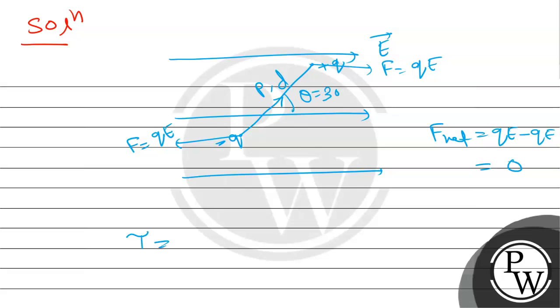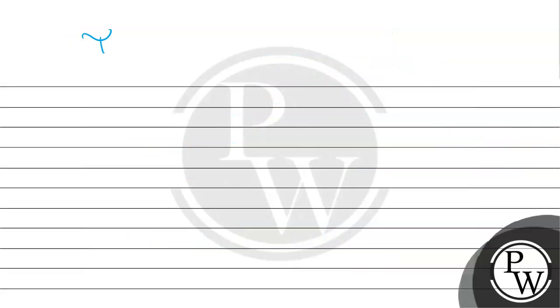Now for the torque: torque equals tau equals P vector cross E vector, which equals P E sin theta. Given theta equals 30 degrees, so the torque is P E sin 30, which equals P E divided by 2. So torque is present.